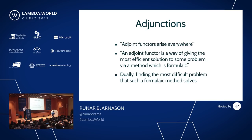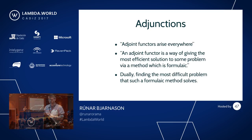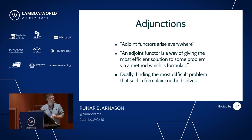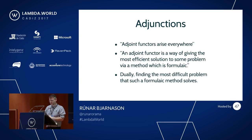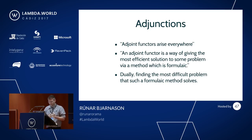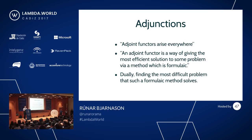Saunders Mac Lane famously said 'adjoint functors arise everywhere.' The Wikipedia definition for adjunctions says that an adjoint functor is a way of giving the most efficient solution to some problem via a method which is formulaic. Dually, we could use an adjunction to find the most difficult problem that a formulaic method solves.